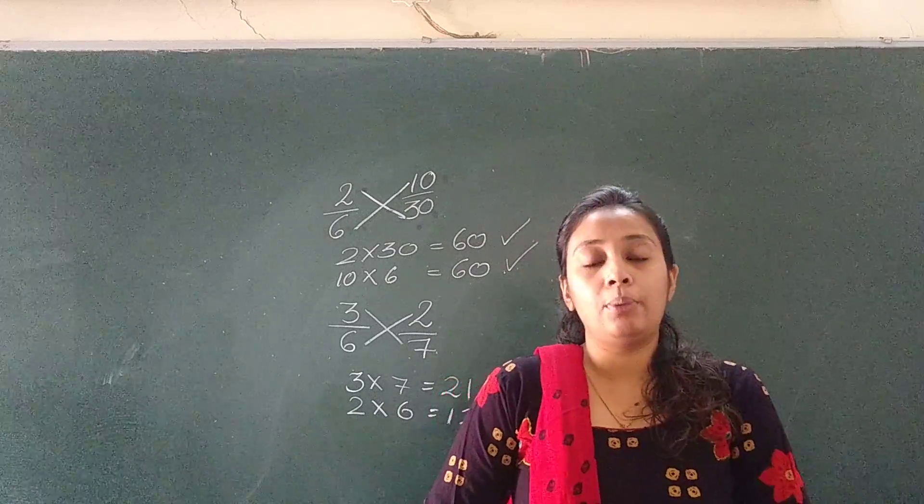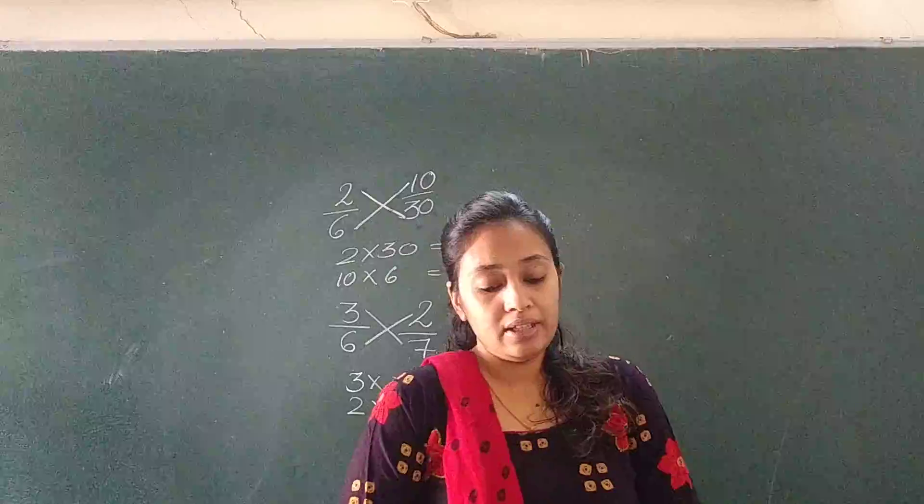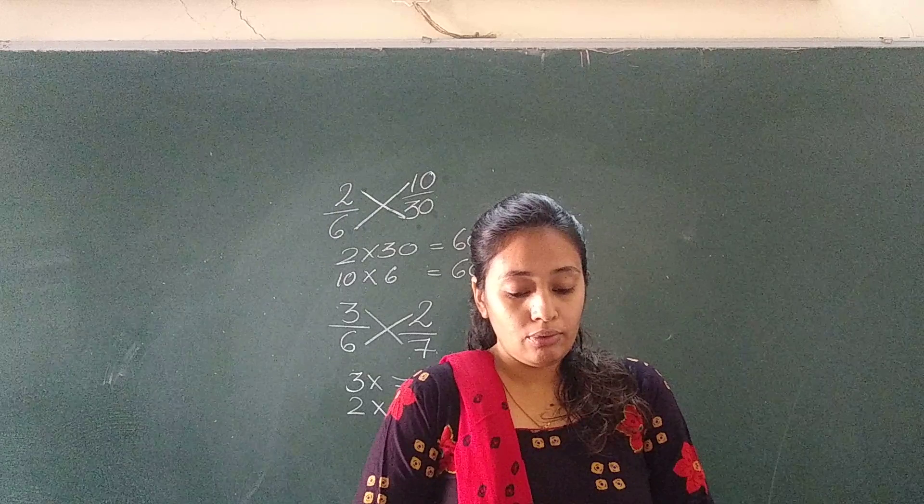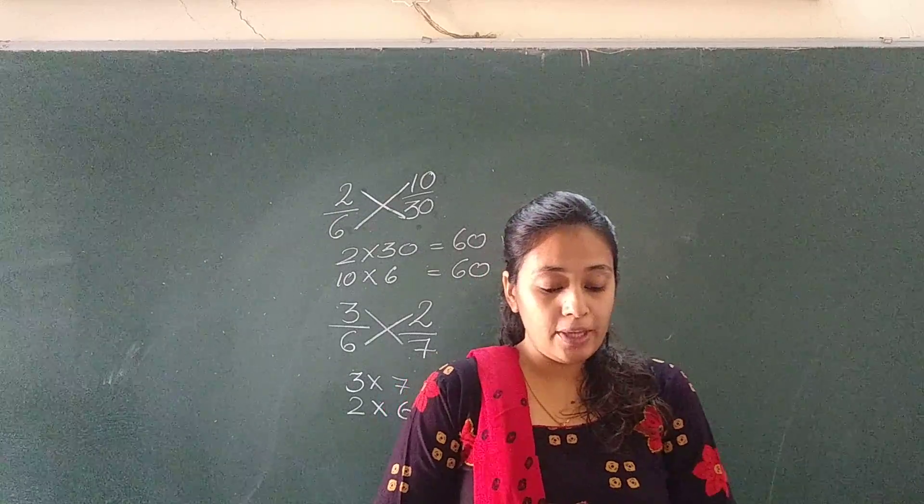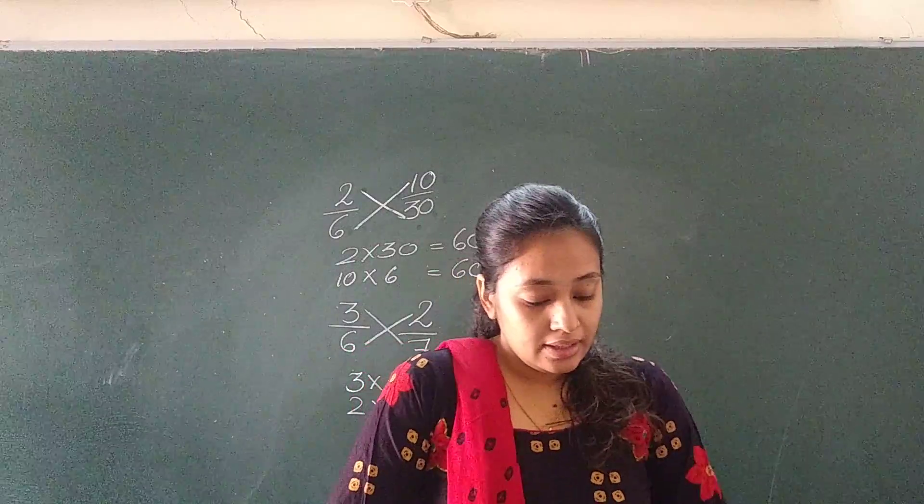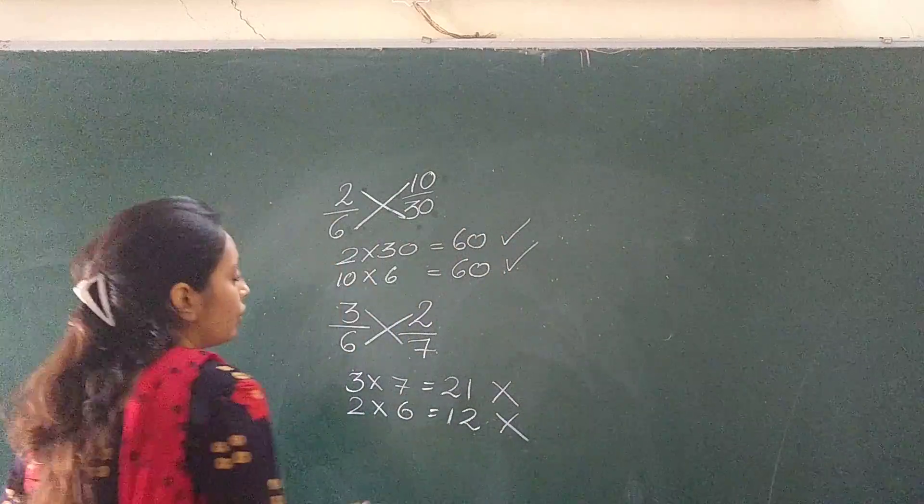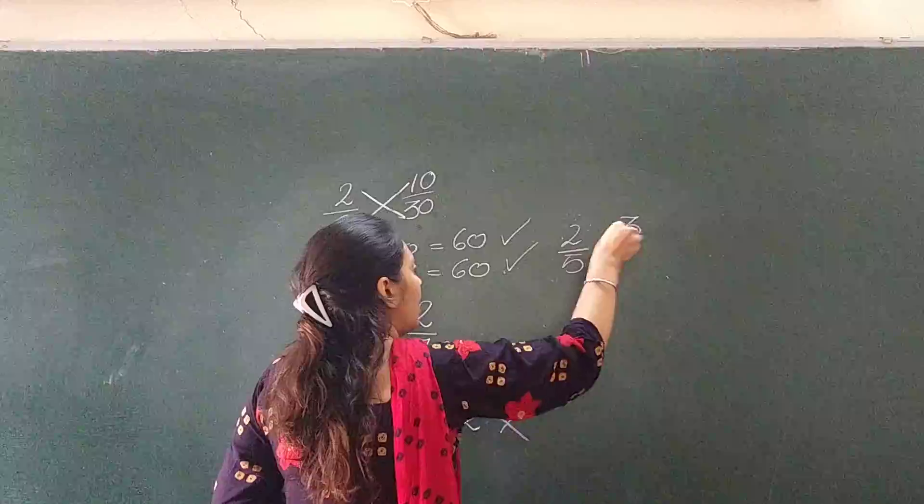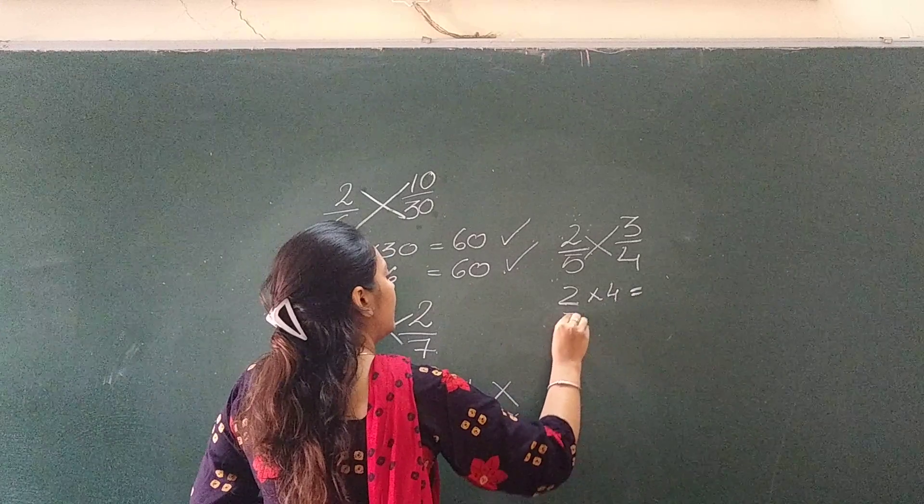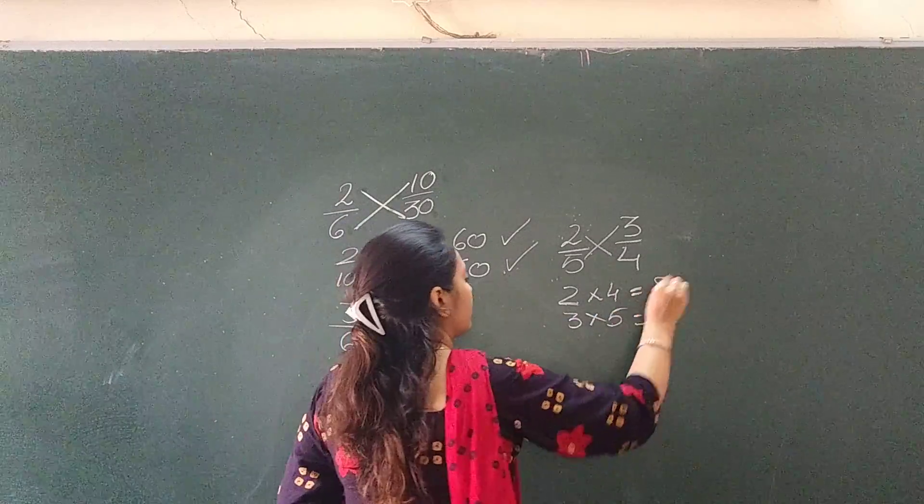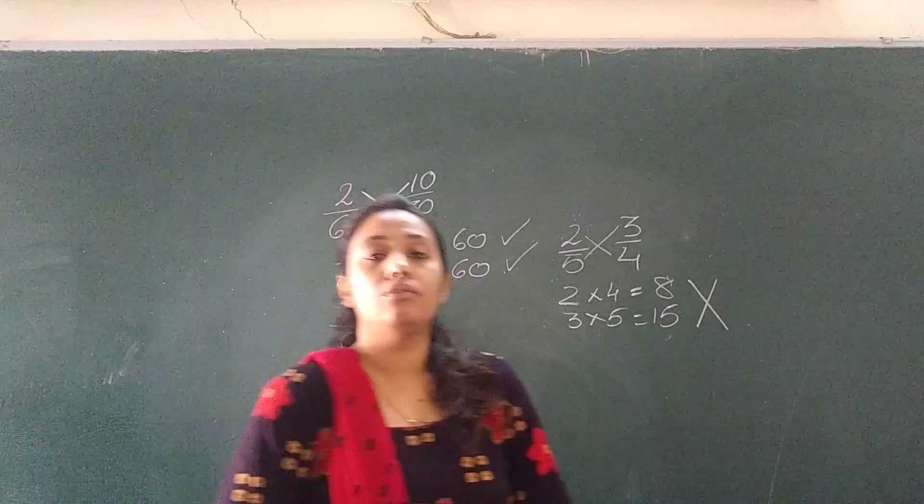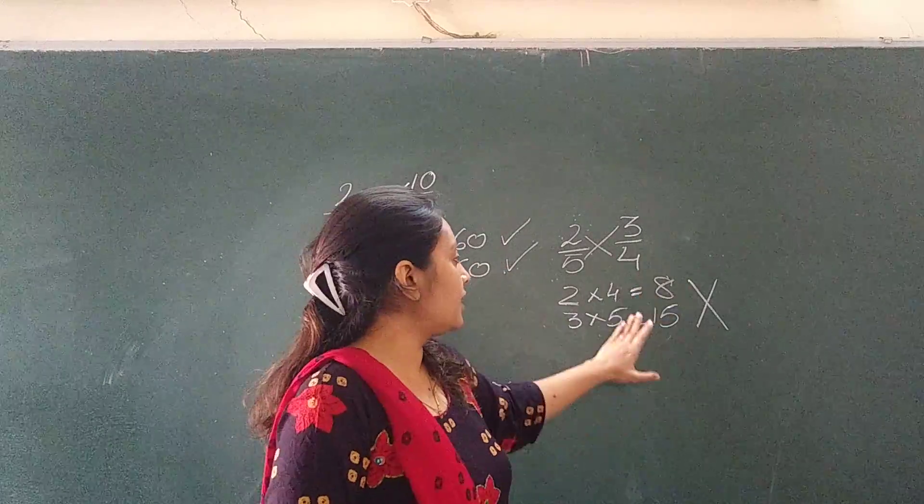If we cross multiply 3 upon 5 and 9 upon 15, both answers are 45, so the fractions are equivalent. Check whether the two fractions are equivalent or not. Example number 1: 2 upon 6 and 10 upon 30. We checked earlier, 60, equivalent. Next is 2 upon 5 and 3 upon 4. Cross multiply it. That is 2 multiplied by 4, 3 multiplied by 5. 8 and 15. No, these fractions are not equal because their products are different.